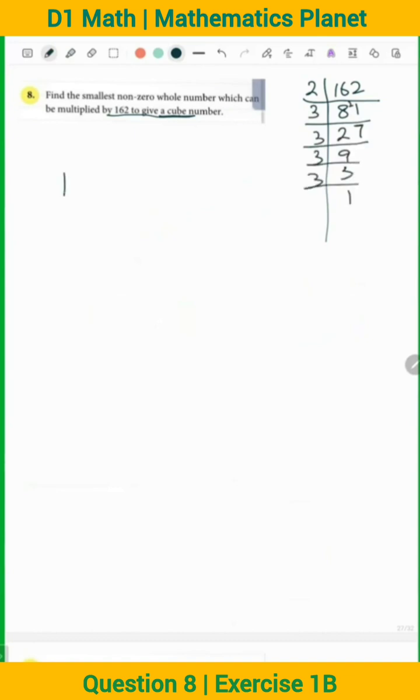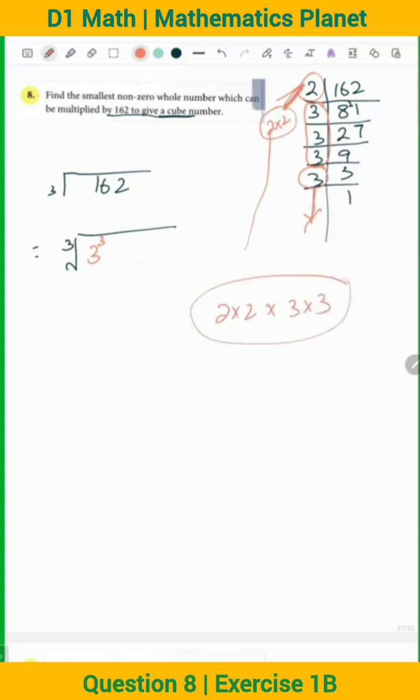When I put 162 in cube root form as pairs, I get only one complete pair of 3 cubed, but this 3 also needs a pair and the 2 also needs a pair. So this 2 should be multiplied with 2 times 2. The missing element is 2 times 2, and the missing element is 3 times 3.